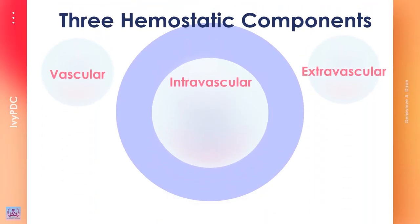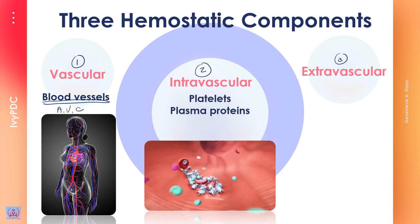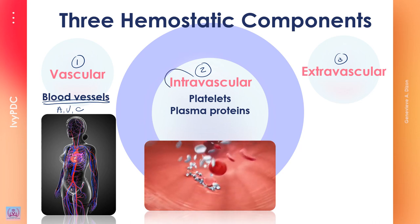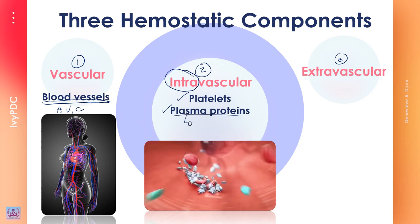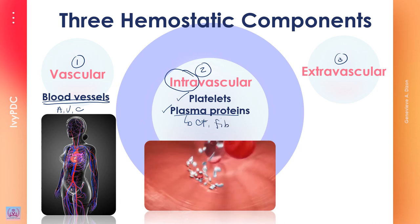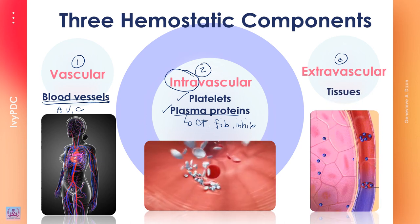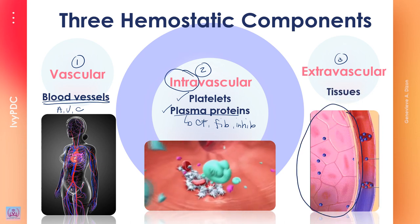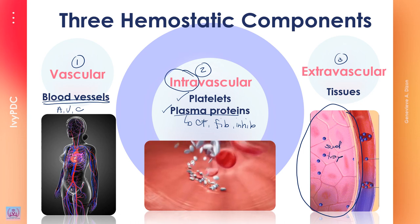There are three components in hemostasis: the vascular, intravascular, and extravascular components. The vascular component refers to the blood vessels through which blood flows — the arteries, veins, and capillaries. The intravascular component refers to those that circulate within the blood vessels, including the platelets and plasma proteins such as coagulation factors, fibrinolytic proteins, and their inhibitors. The extravascular component refers to the tissues surrounding the blood vessels, which provide back pressure on the injured vessel through swelling and trapping escaping blood.